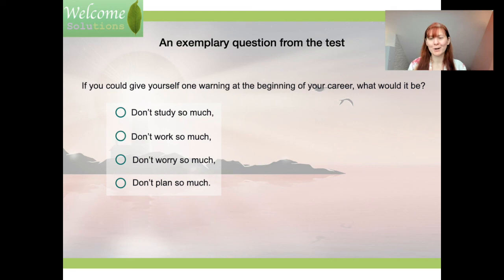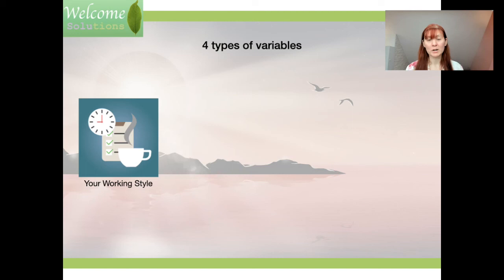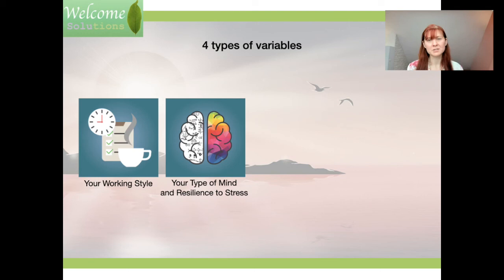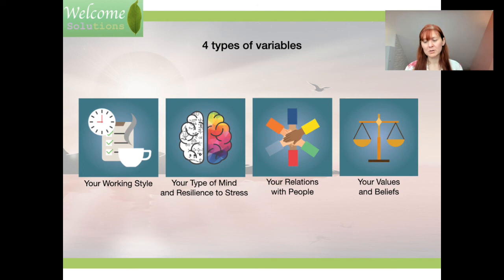Our test takes into account four types of variables: first, working style and resilience to stress; second, type of mind — for instance, whether you are a specialist or generalist, or what types of problems you like to solve; third, your relations with people — your bosses, authorities, peers, and all professional relationships; and fourth, your values and beliefs.